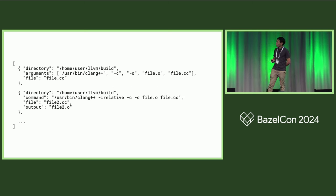Here's an example. Each object has a directory field and either an argument or a command field, a file field, and maybe an optional output field.